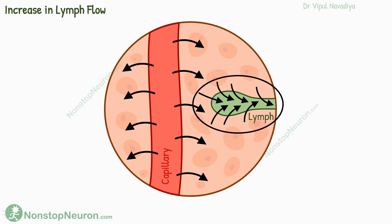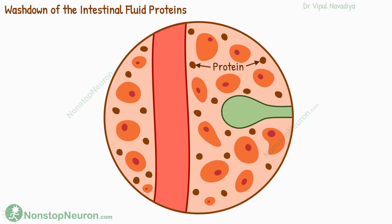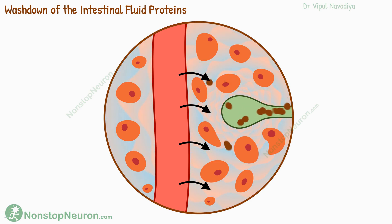The final factor is a result of this increase in lymph flow. The proteins in the interstitium exert colloid osmotic pressure, which tends to increase filtration. But with an increase in lymph flow, these proteins are washed away. So the osmotic pressure decreases, and this contributes to decreasing the net filtration.